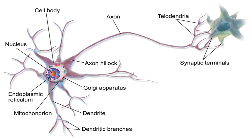Dopamine is a neurotransmitter that acts on D1-type receptors (D1 and D5), which are Gₛ-coupled and increase cAMP and PKA, and D2-type receptors (D2, D3, and D4), which activate Gᵢ-coupled receptors that decrease cAMP and PKA. Dopamine is connected to mood and behavior and modulates both pre- and postsynaptic neurotransmission. Loss of dopamine neurons in the substantia nigra has been linked to Parkinson's disease. Dopamine is synthesized from the amino acid tyrosine, which is catalyzed into L-DOPA by tyrosine hydroxylase, and L-DOPA is then converted into dopamine by aromatic amino acid decarboxylase.